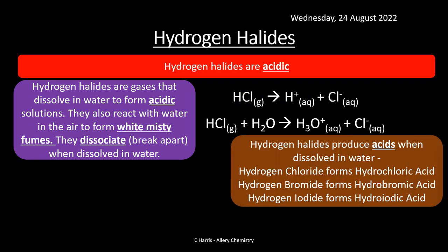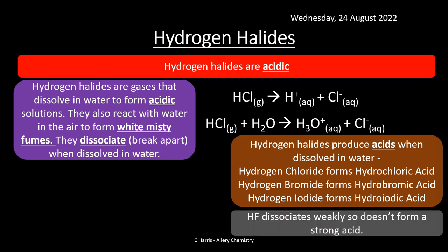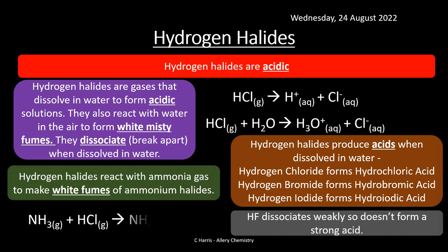Hydrogen halides produce acids when dissolved in water: hydrogen chloride forms hydrochloric acid, hydrogen bromide forms hydrobromic acid, and hydrogen iodide forms hydroiodic acid. HF, hydrogen fluoride, dissociates weakly and doesn't form a very strong acid. Hydrogen halides also react with ammonia gas to make white fumes of ammonium halides — for example, ammonia and HCl form ammonium chloride. This is a neutralization reaction.